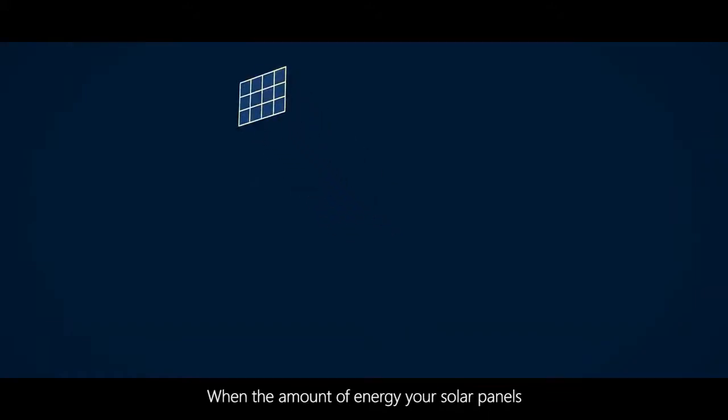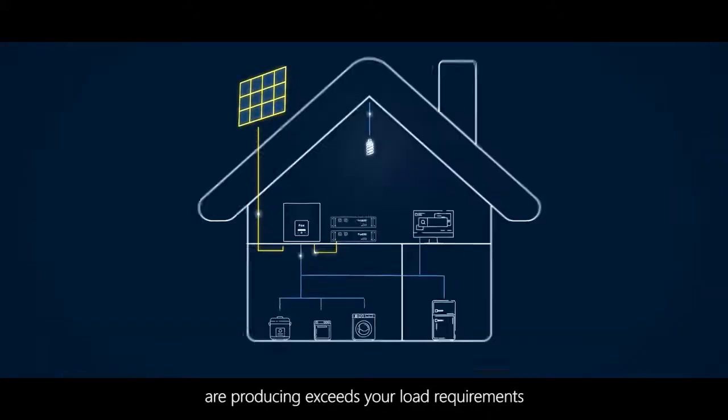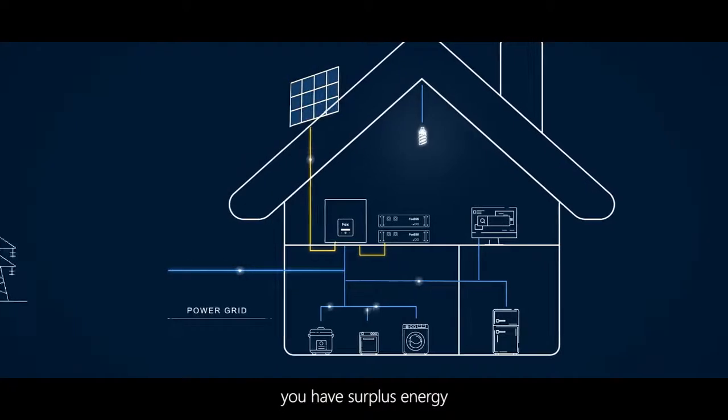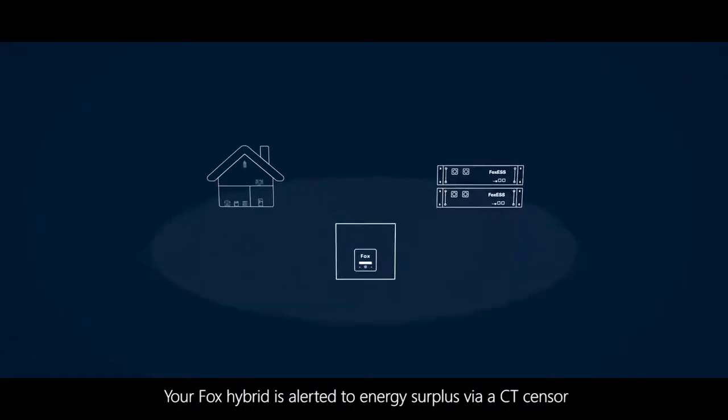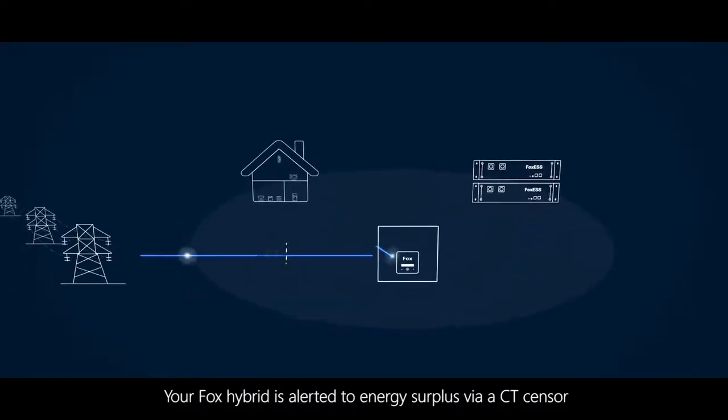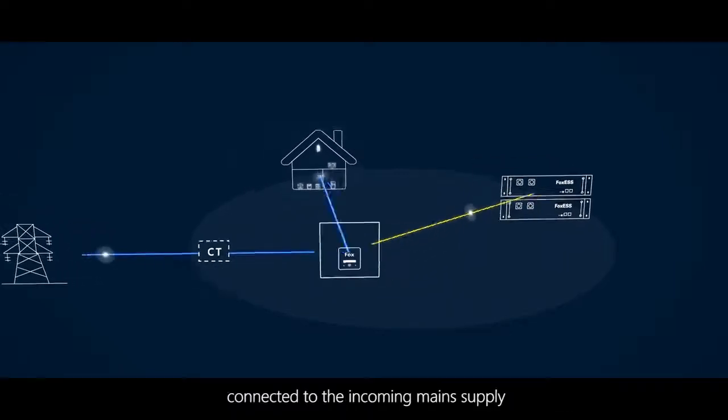When the amount of energy your solar panels are producing exceeds your load requirements, you have surplus energy that would usually be exported to the grid. Your Fox hybrid is alerted to this energy surplus via a CT sensor connected to the incoming main supply.